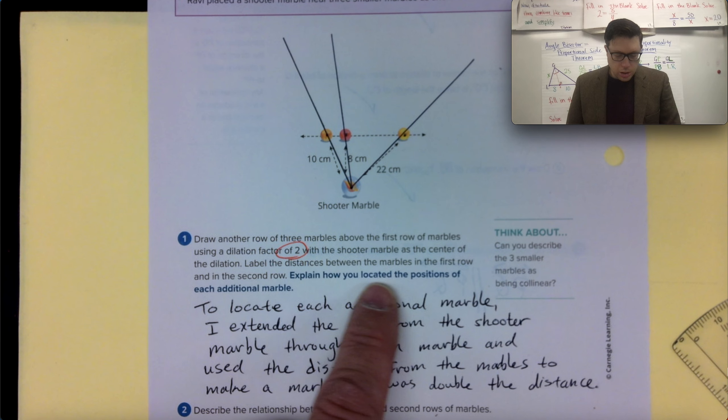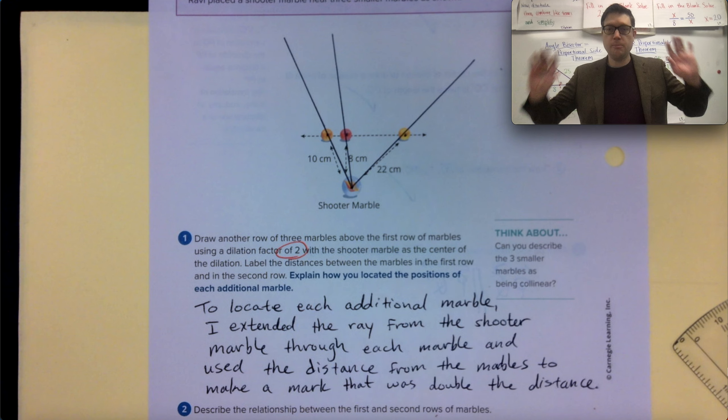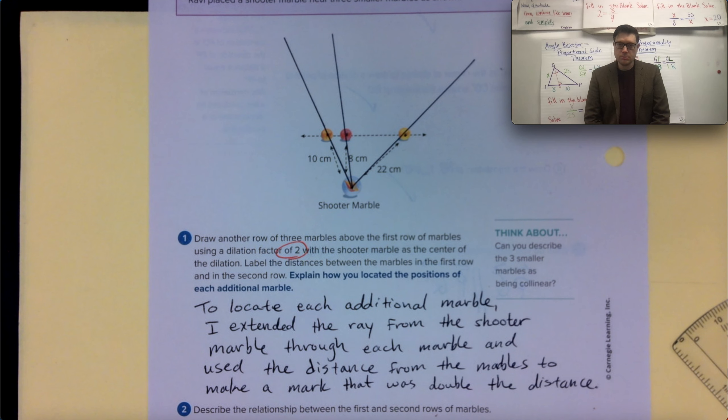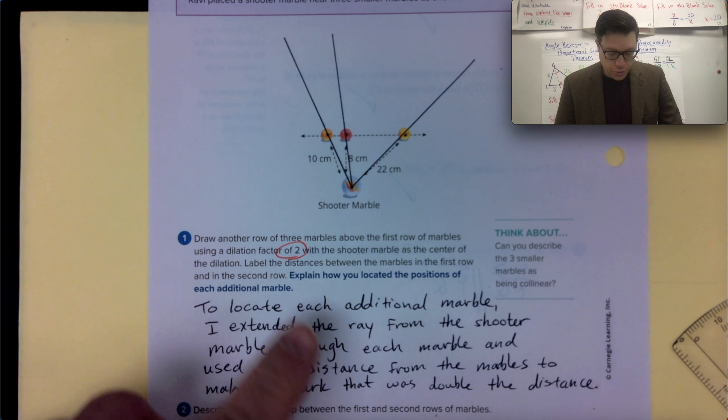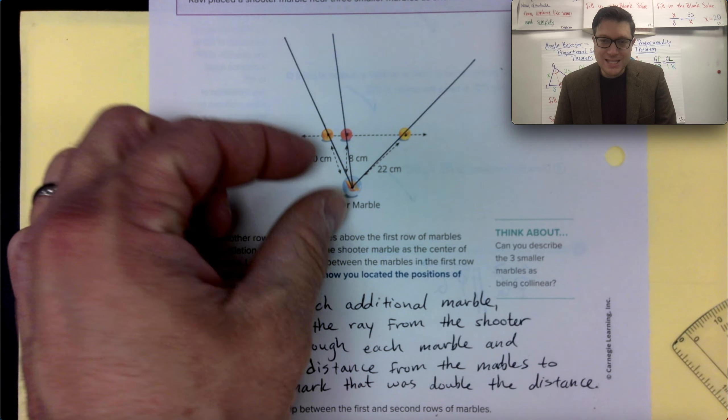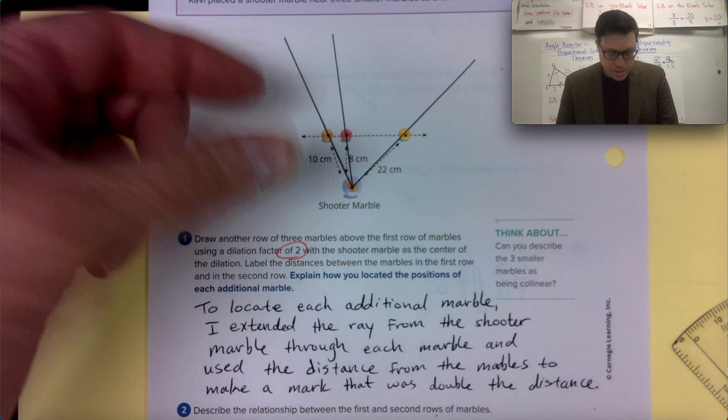That's actually what I'm explaining in question one. So explain how you located the positions of each additional marble. Well, to locate each additional marble, I extended the ray from the shooter marble through each marble, and then I used the distance from the marbles to make a mark that was double the distance. So now I'm going to do that. And you should follow along as well.